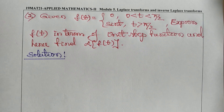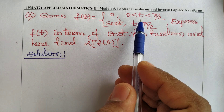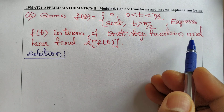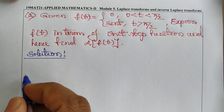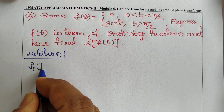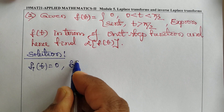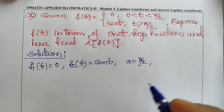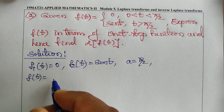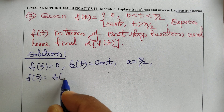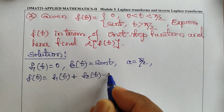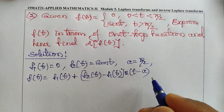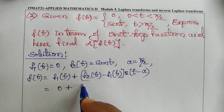Problem 2: f(t) = 0 for 0 < t < π/2, and sin(t) for t > π/2. Express f(t) in terms of the unit step function and hence find L{f(t)}. Here f₁(t) = 0, f₂(t) = sin(t), and a = π/2. So f(t) = 0 + [sin(t) - 0]·u(t - π/2) = sin(t)·u(t - π/2).